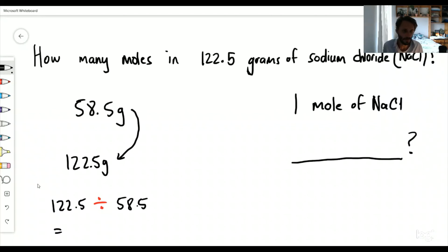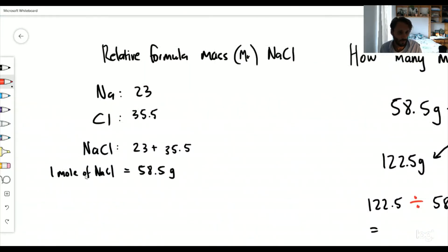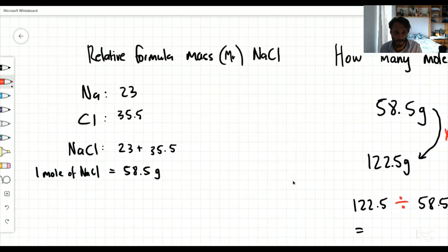This gives us 2.09. So effectively, we times 58.5 by 2.09 and that will give me 122.5. Remember 58.5 came from what one mole of sodium chloride is, how much that weighs.